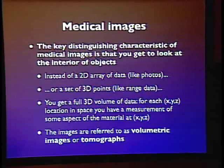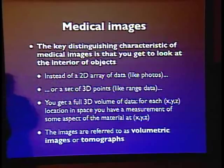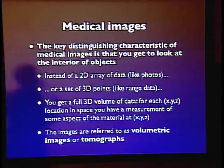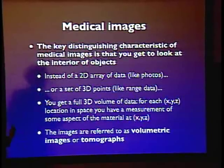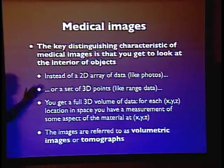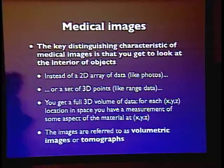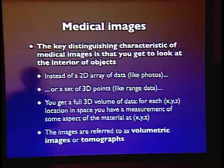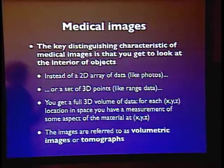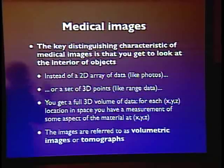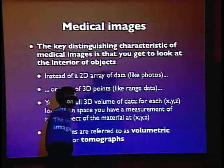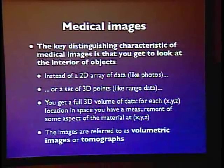Mathematically, instead of a 2D array of floating-point numbers as in a grayscale image — with higher values representing brighter locations — and unlike a set of 3D surface positions with point coordinates and edges as in range data, with volumetric medical images you get basically a 3D array of data. Think of it like a Rubik's Cube of data, with 3D indexes.